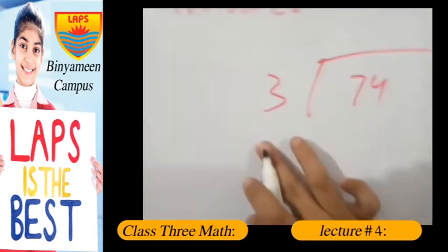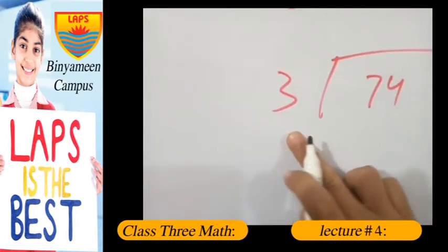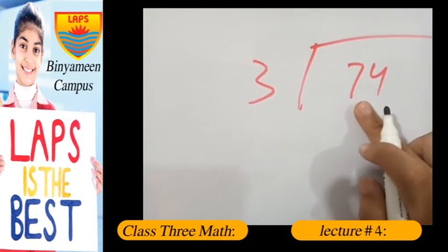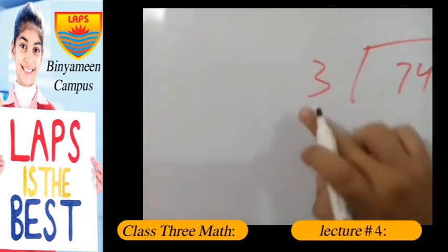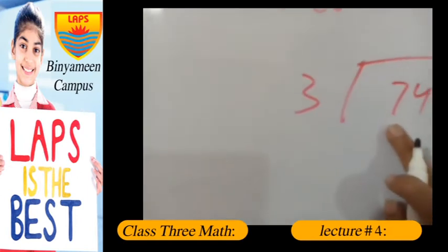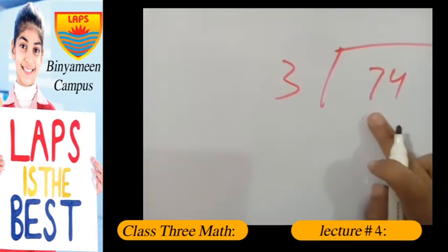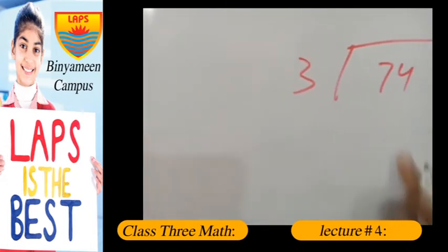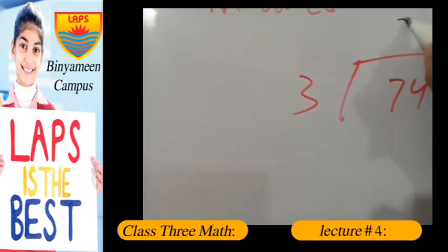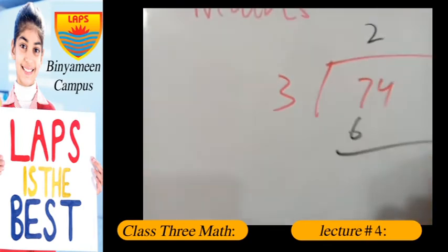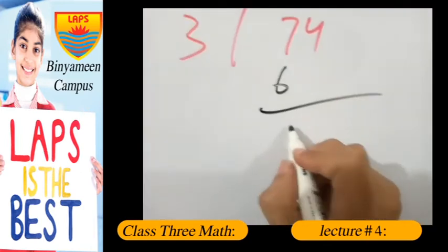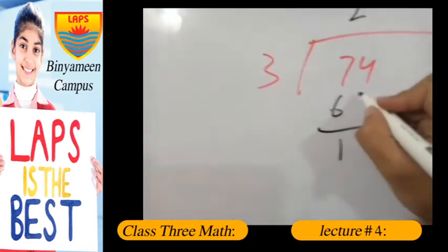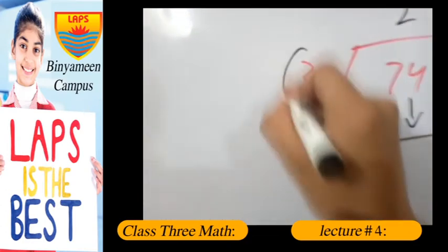We have 3 as a divisor and we are dividing 74 by 3. So 7 is actually not a multiple of 3, so we have to choose a smaller number which is 6. So if we multiply 3 with 2 we get 6, and if we subtract 6 from 7, we get 1, and 1 is actually smaller than our divisor here.